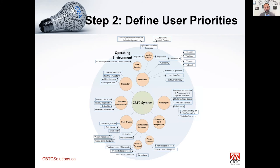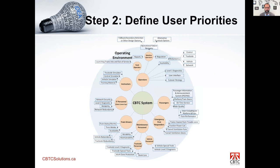For emergency first responders, if there is a problem at track level, they need trains cleared from the travel zone, traction power cut, tunnel vent doors closed, and tunnel ventilation fans on. There may be other requirements from first responders for them to react to any emergency situation.